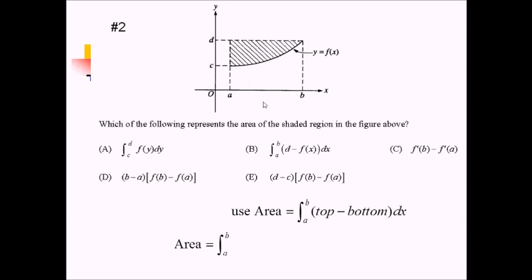For the integrand, we need the top function minus the bottom function. The top function is just the line y equals d. The bottom function is this f of x function. So I write d minus f of x dx, and looking for an answer choice that matches, it looks like B is the one we need.